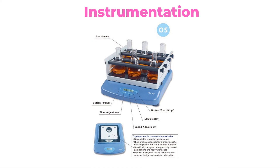Instrumentation of Rotary Flask Shaker. A diagrammatic representation includes: attachment of the flask to the magnetic plate, button of power, time adjustment button, speed adjustment button, LCD display, and button of start and stop.